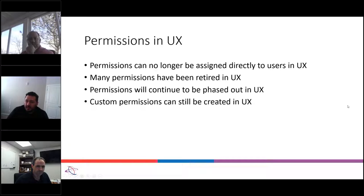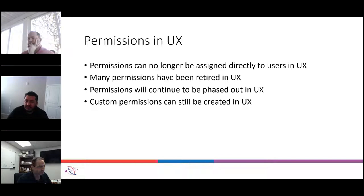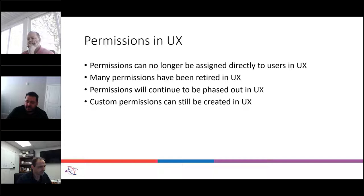Permissions. The main difference in permissions from UX and classic is that we can no longer assign permissions directly to users in UX — they have to be assigned to a role. Many of the permissions have been retired, so from the whole amount of permissions, we only have about 50 of them available right now, and those are going to be phased out. Eventually we're going to live in a world where permissions no longer exist and we'll be using only actions. Custom permissions can still be created in UX. If you created a permission to set security on a setup table, for example, we can still do that.